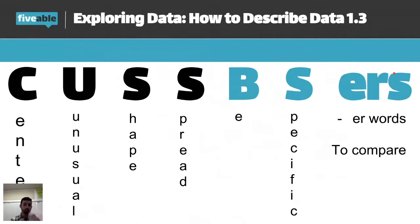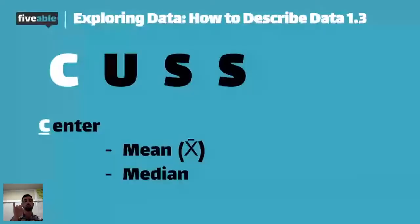The C in CUS is for the center. Now, when we describe a distribution, there are two centers that we look at. First is the median. So the median is going to be the middle number when you order it from least to greatest. So if you have like one, two, three, four, five, the median is going to be three because it's the middle number in order from least to greatest. Now, we get the median from box plots. It's tough to get it from histograms, but we can kind of guess it. So box plot gives you the exact median.